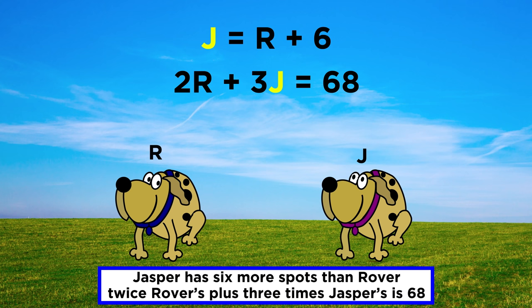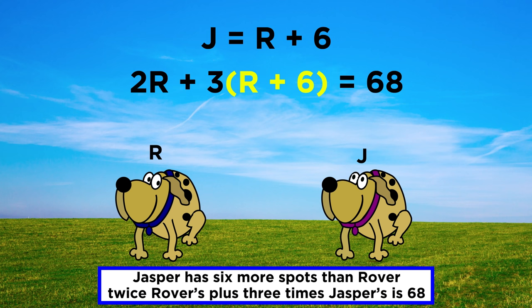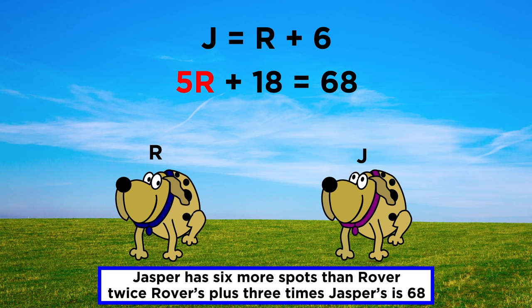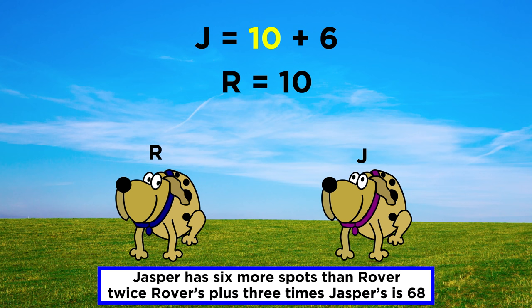This term has to go inside parentheses, and we can immediately distribute this three. That gives us two R plus three R plus eighteen. We can combine the R's to get five R, subtract eighteen from both sides to get fifty, and then divide everything by five to get R equals ten. If R is ten, then J is sixteen, and that's all the spots.